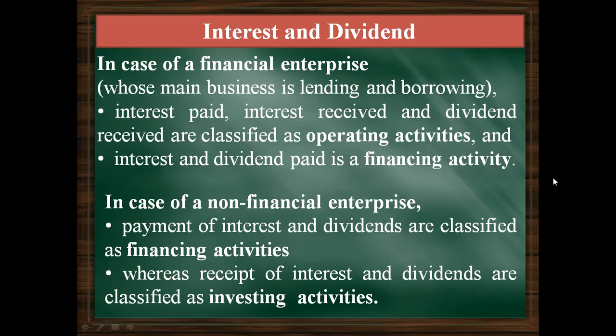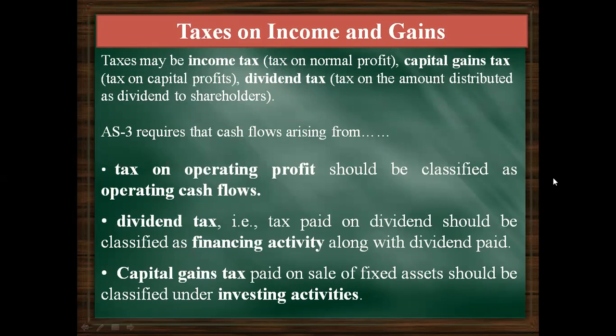For taxes on income: tax on operating profits is classified as operating cash flow; dividend tax (tax paid on dividends) is classified as a financing activity; and capital gain tax on sale of fixed assets is classified under investing activity. So the tax treatment depends on which activity generated the income being taxed.